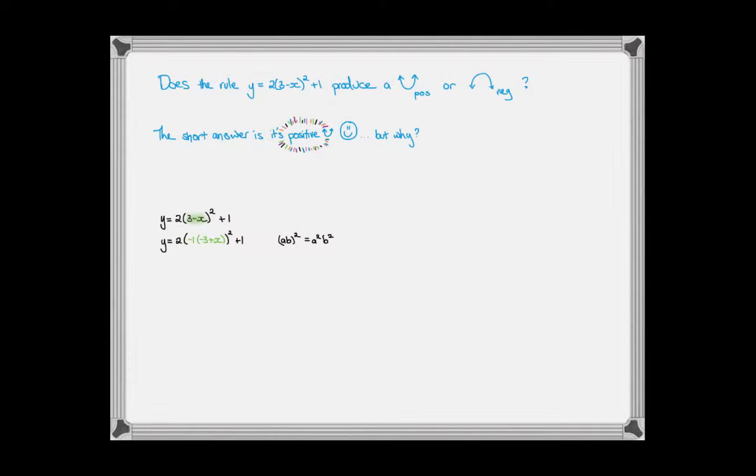So using this index law that I've written here on the right, what I can do is apply that to these two parts that are being multiplied together that are all to the power of 2. So what I end up with is negative 1 squared and then negative 3 plus x all squared.